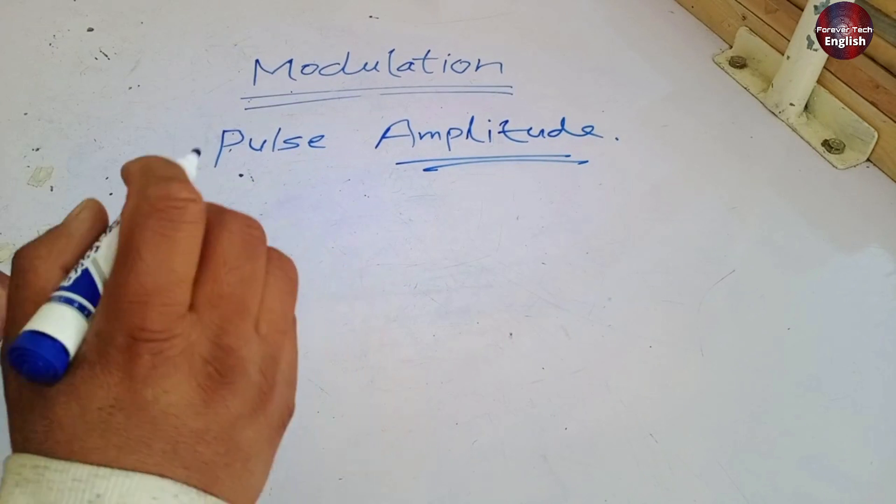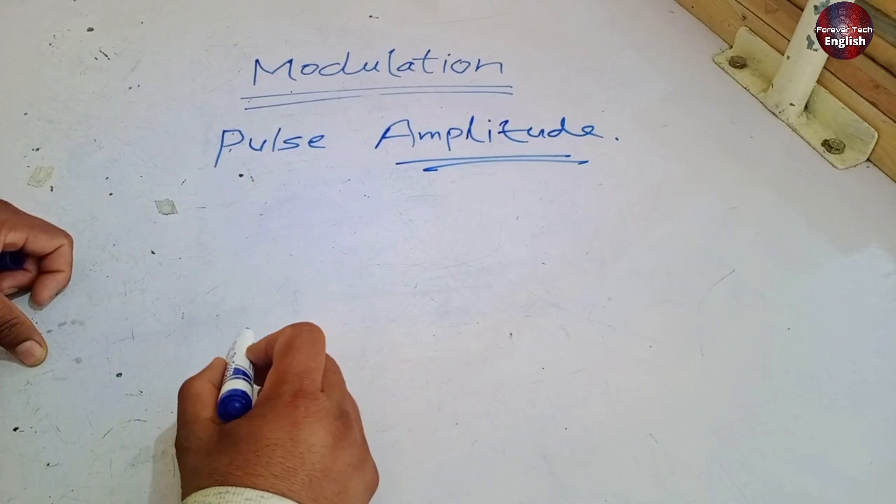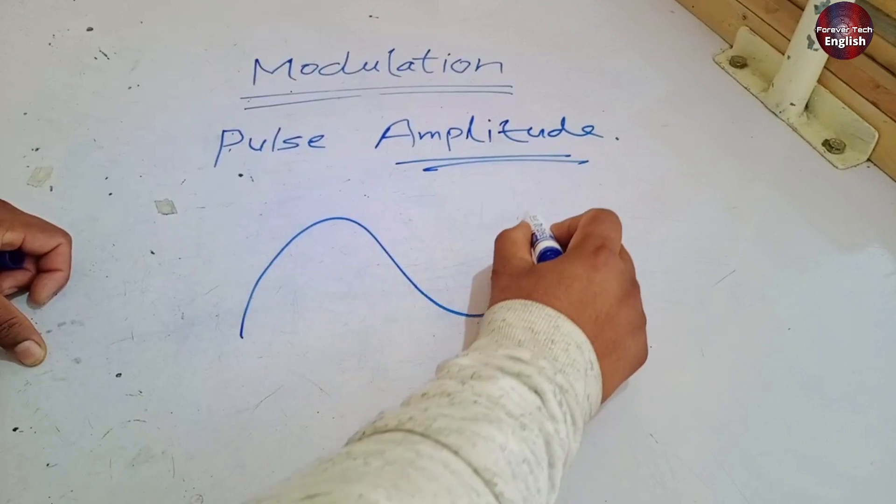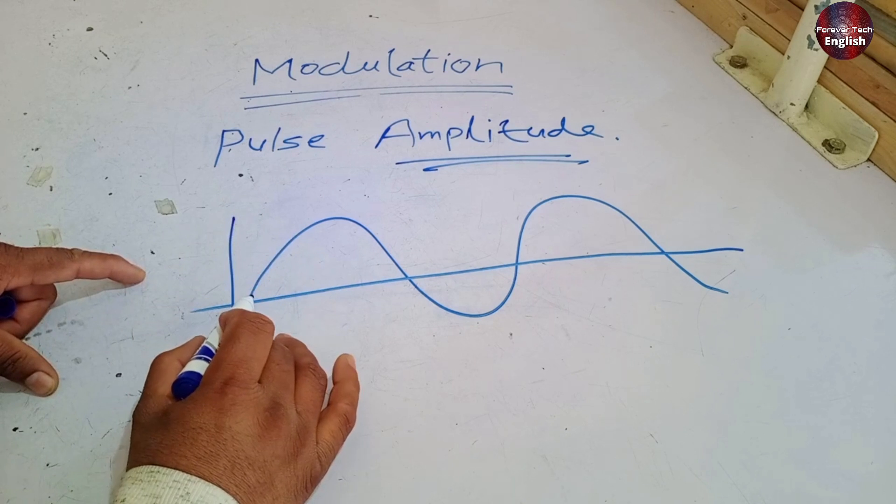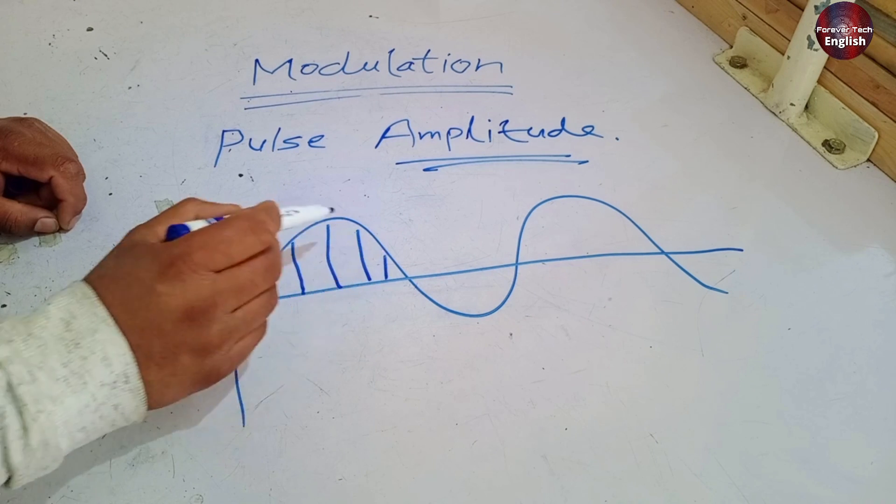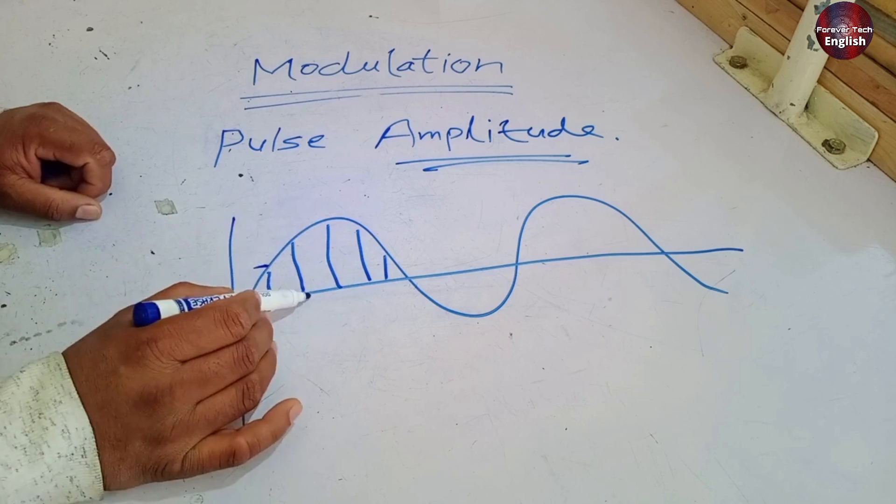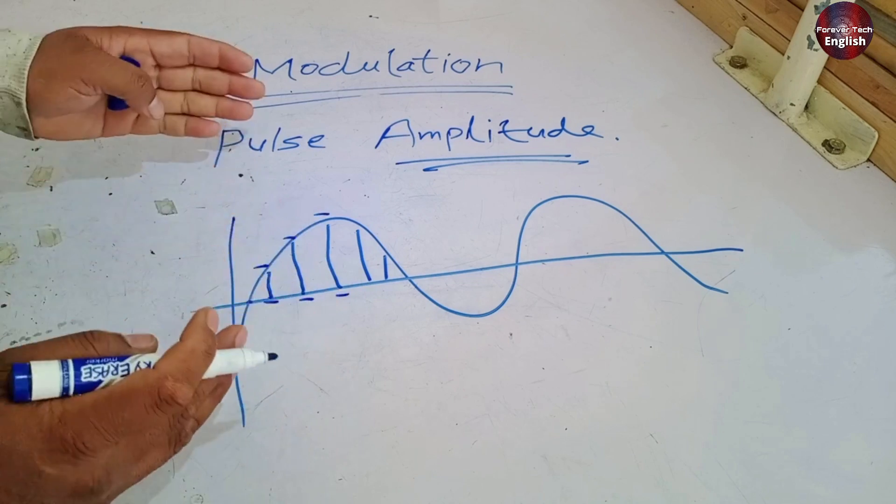So what is amplitude? I will explain it in terms of electricity, because that's our topic. When sinusoidal waves are flowing, there is a midpoint called the zero point. If I draw lines here, the distance between the lines is called amplitude, meaning its length.